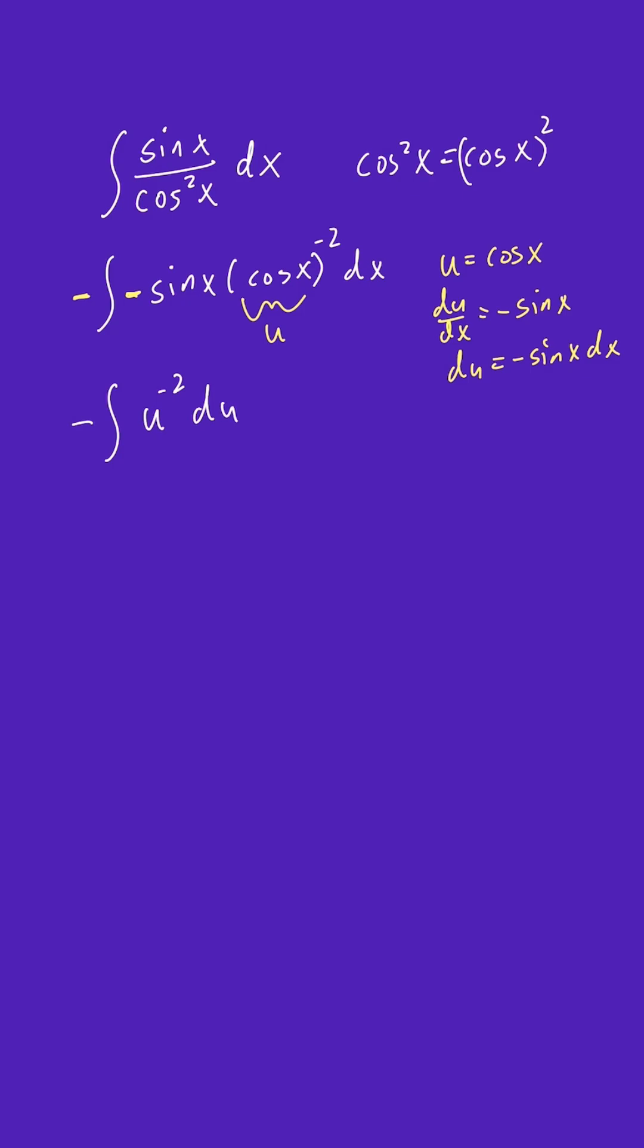And this we can easily integrate. So we add up this power by 1 and then multiply by the reciprocal. So the new exponent is going to be negative 1. The reciprocal is negative 1. So the negative 1 times this negative 1 cancels out. So you're just left with u to the new power of negative 1 plus C. And we're almost done. We just need to substitute cosine x in there. So you'd have cosine x to the negative 1 power plus C.